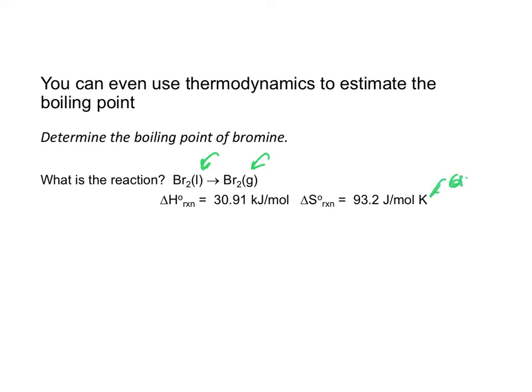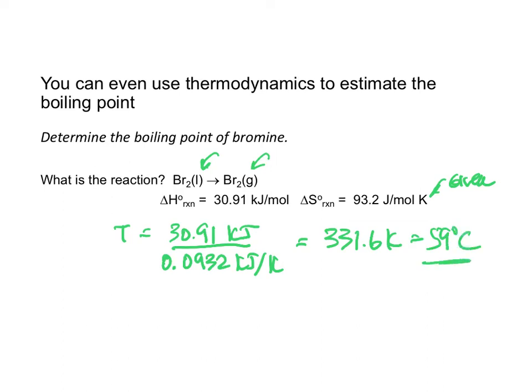This would either be given or if you're doing your homework you need to look it up. But the best part is it's such a simple calculation. T equals delta H, 30.91 kilojoules, divided by delta S, 0.0932 kilojoules per kelvin. That will give us a temperature of 331.6 kelvin and that is 59 degrees centigrade.